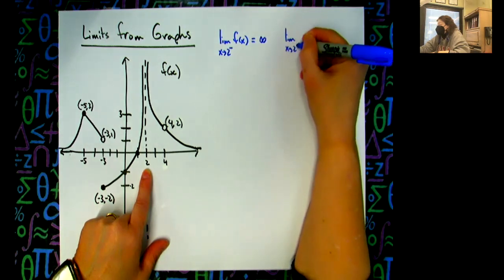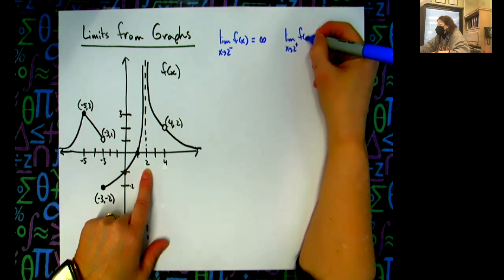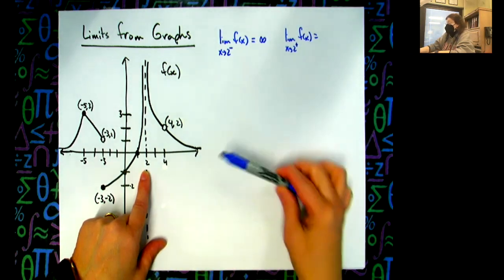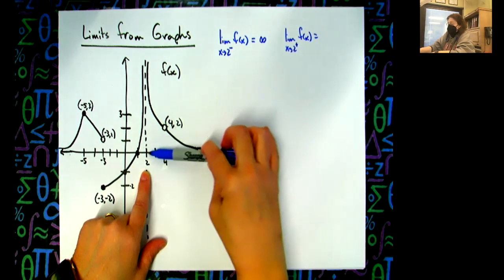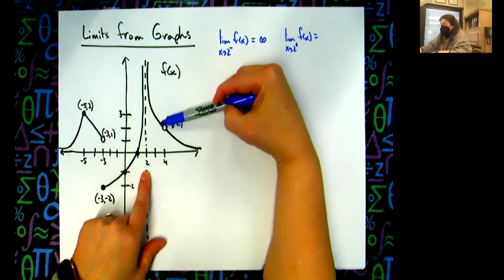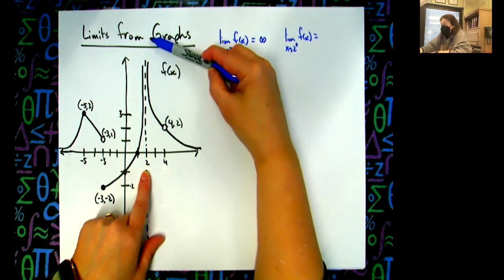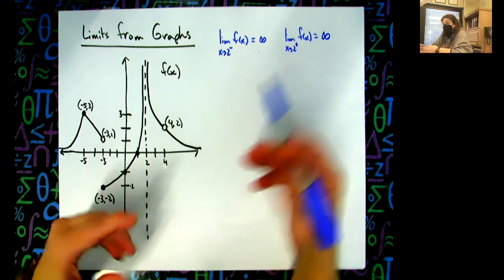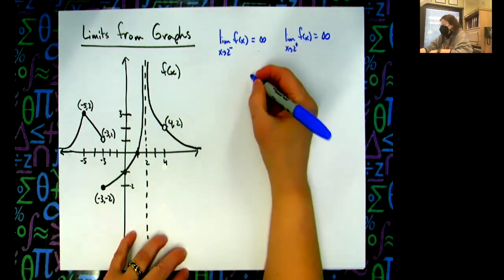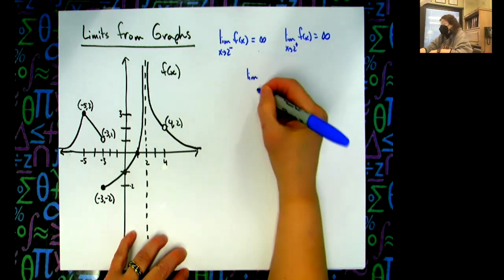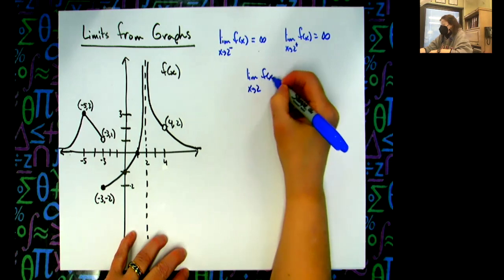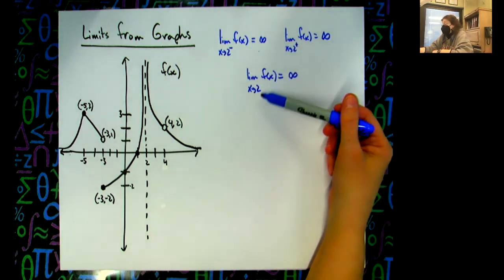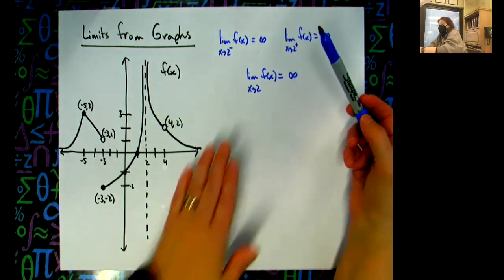I could also do the limit as x approaches two from the right — that has a little plus sign after it — of f of x. Again, two on my x axis is right here. I'm coming from the right, but I don't care what's going on out there. I want to know what's happening as it gets infinitely close, and the function is going this direction, so what y value does that give? Positive infinity again. The limit from the left and the limit from the right are equal, so the overall limit as x approaches two of f of x equals infinity.